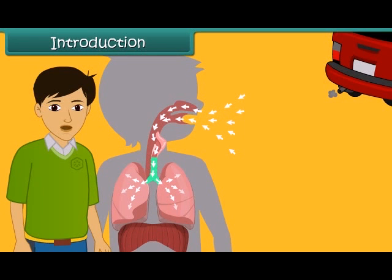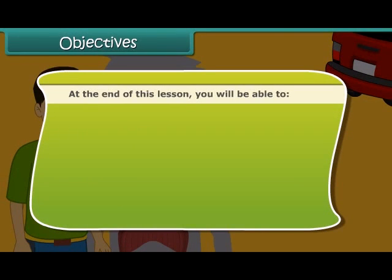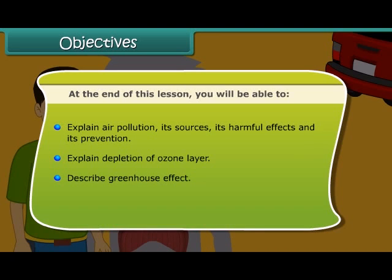In this lesson, we will study about the harmful changes taking place in our surroundings and their effects on our lives. At the end of this lesson, you will be able to: explain air pollution, its sources, its harmful effects and its prevention; explain depletion of ozone layer; describe greenhouse effect; and explain the formation of acid rain.